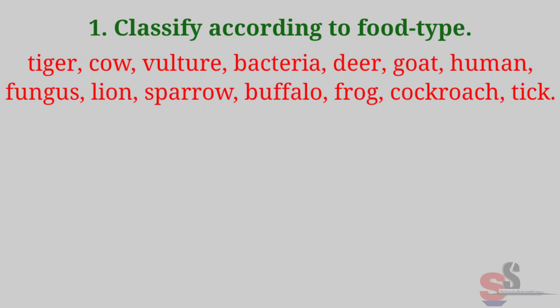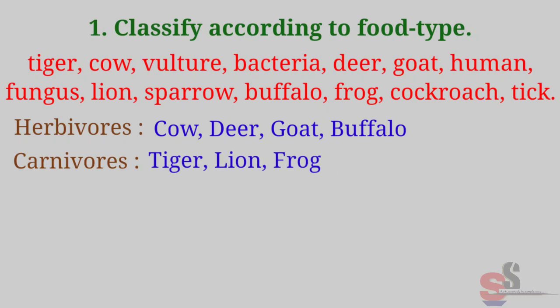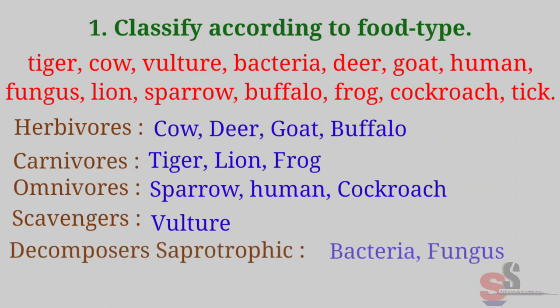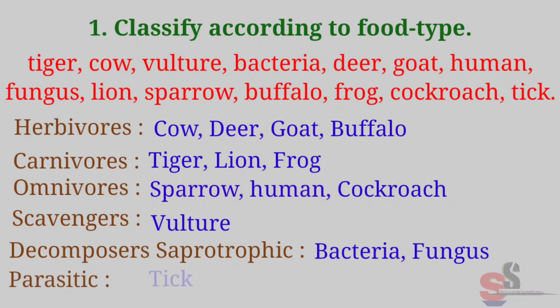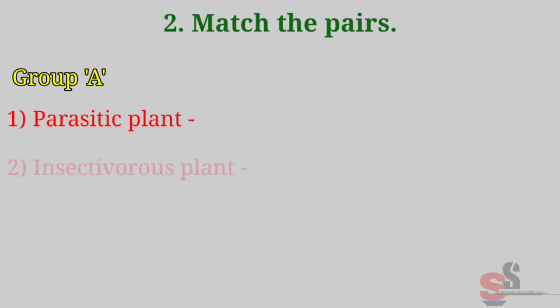Answer: Herbivorous — Cow, Deer, Goat, Buffalo. Carnivorous — Tiger, Lion, Frog. Omnivorous — Sparrow, Human, Cockroach. Scavengers — Vulture. Decomposers / Saprotrophic — Bacteria, Fungus. Parasitic — Tick. Question 2: Match the pairs. Group A: 1st Parasitic plant, 2nd Insectivorous plant, 3rd Saprophytic plant, 4th Symbiotic plant.